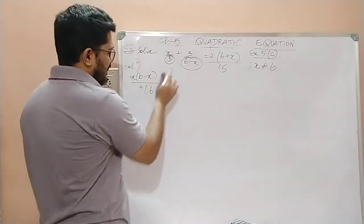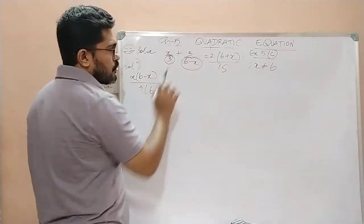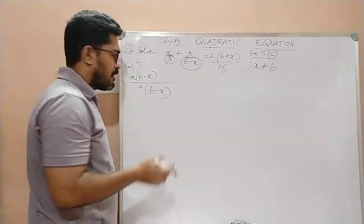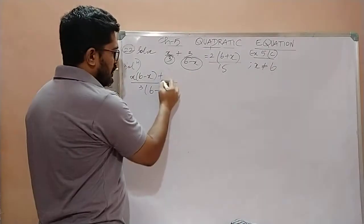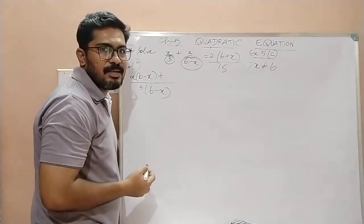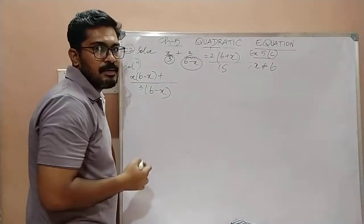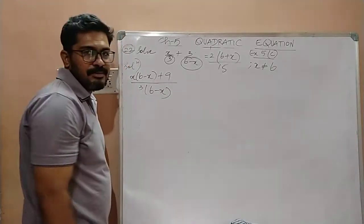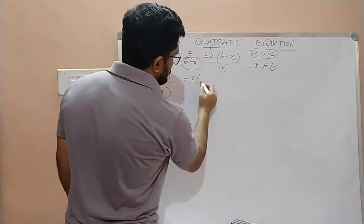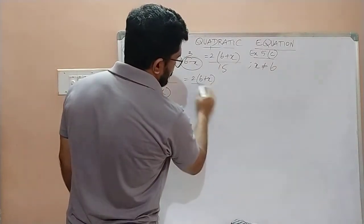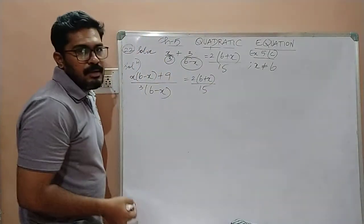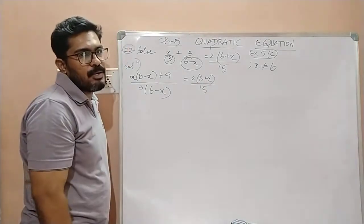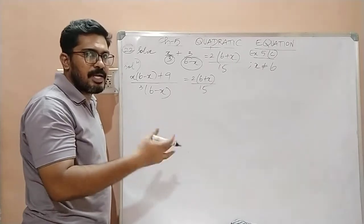Done? Now, take the LCM. Take the LCM divided with the second denominator. So 6 minus x and 6 minus x get eliminated. 3 is left which will get multiplied with the numerator 3. So this 3 and this 3, they both get multiplied and form 9. Which is equal to 2 times 6 plus x divided by 15. So then for the time being, let this 2 into 6 plus x remain like that. Don't change it. We will expand it later on.